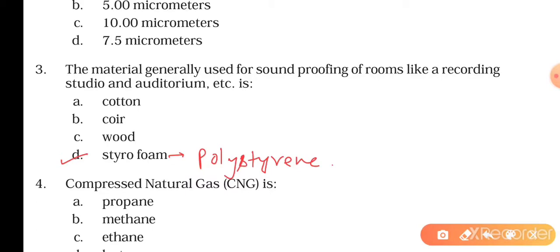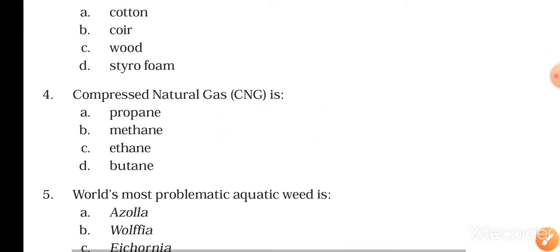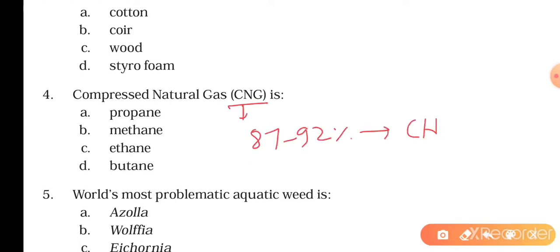The next question is: compressed natural gas is propane, methane, ethane, or butane. As you know, in CNG at least 70 to 92 percent is methane, so the right answer will be methane.